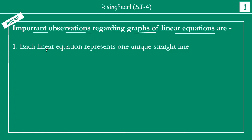The first point, friends, is that each linear equation represents one unique straight line. So every linear equation is basically a straight line on the graph.